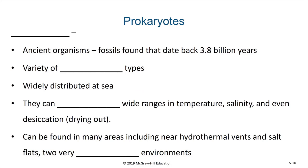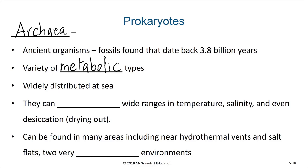The first of these groups we'll talk about are the archaea. These are ancient organisms — in fact, there are fossils of archaea that date back 3.8 billion years. They're one of the first forms of life on this planet. Archaea themselves have a variety of metabolic types. Archaea are pretty widely distributed at sea, although they can end up living in environments that other forms of life are not able to. They can tolerate wide ranges in temperature, salinity, and even desiccation or drying out.